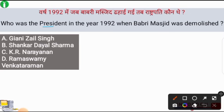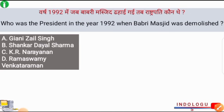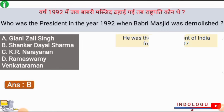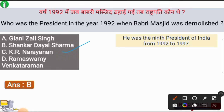Who was the President of India in 1992 when Babri Masjid was demolished? The correct answer is option number B, i.e. Shankar Dayal Sharma. Shankar Dayal Sharma was the President of India in 1992 when Babri Masjid was demolished. He was the ninth President of India, serving from 1992 to 1997.